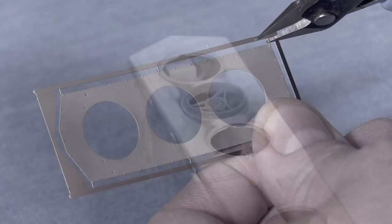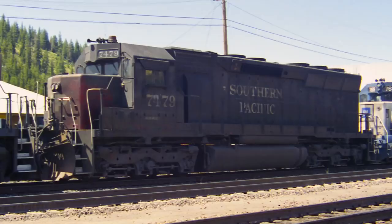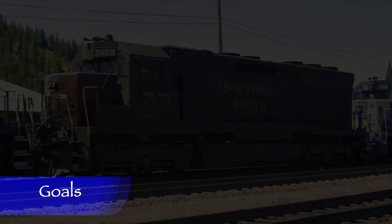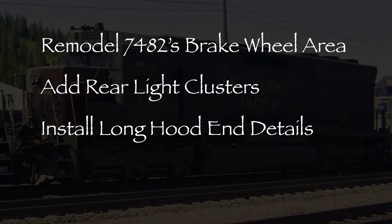In the last episode, I worked on the two SP SD45Rs and the Conrail SD40, prepping the shells for replacement fans and adding a few details. My goal this time is to continue the detailing of the long hoods of the two SD45Rs and the B30-7. Specifically, my goals for this episode are to remodel 7482's brake wheel area, add rear light clusters to all the SP and Cotton Belt units, and complete the detailing on the ends of the long hoods on those same models.